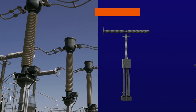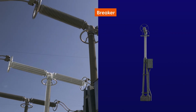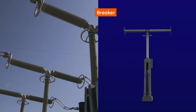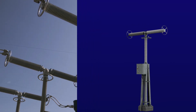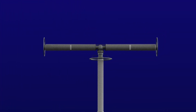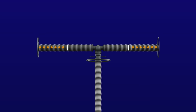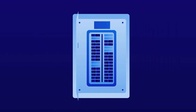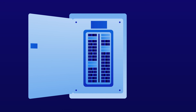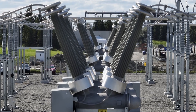Next is the breaker. It protects the grid and the equipment in the substation by automatically cutting off the power when there's a problem. It can also be opened and closed manually for maintenance, for example. It's like the circuit breakers in your distribution panel at home. There are different models, but they all serve the same purpose.